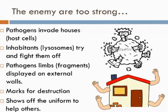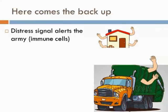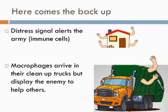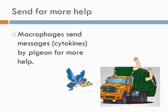It helps out the others by showing what the pathogens look like to any others who might be under attack. So these limbs — the antigens — are detected, and the distress signal is sent out to recruit the army. The first members to arrive are our macrophages, our cleanup trucks. They work by picking up any of the pathogens displaying these features, engulfing them, destroying them, and displaying part of them on the surface of the truck to help others be aware of what they look like.